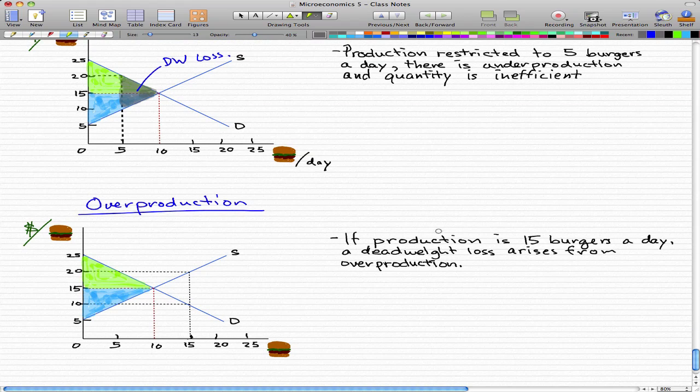So, what happens if production is expanded to 15 burgers a day? A deadweight loss arises from overproduction, because suppliers are making these burgers at $20 per burger, but the demand, the value that consumers put on these burgers are only $15.